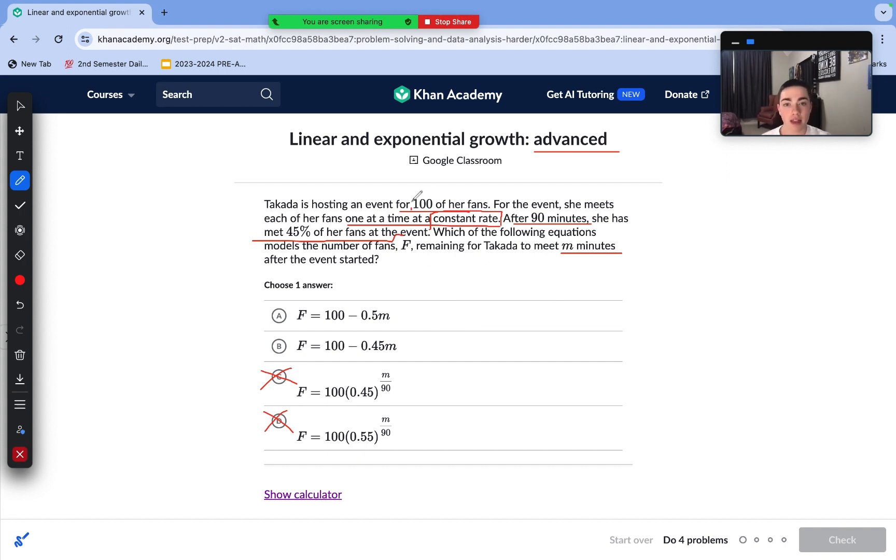So 100 of her fans, that's given that our y-intercept is going to be 100, because she starts with 100, and then she's meeting her fans one at a time, at a constant rate, over a certain amount of time. As we can see here, after 19 minutes, she's met 45% of her fans at the event. 45% of 100 is 45. This percentage sign is trying to trick us into picking exponential function here.